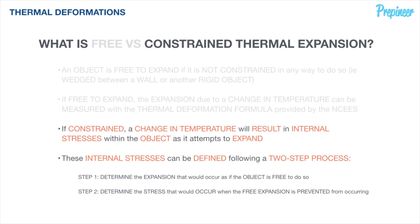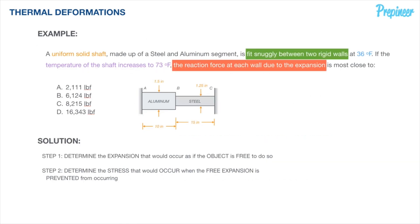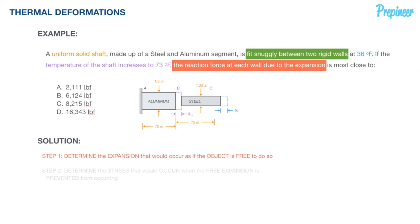It probably looks intimidating at this point, but let's run through this example and you'll see just how streamlined it can be. We'll take that two-step process back to our problem statement. Step one is to determine the expansion that would occur as if the object is free to do so. To carry out this step, we remove one of the walls so we can calculate what this solid shaft would do if it was free to expand — how much would it want to expand if it was free to do so?